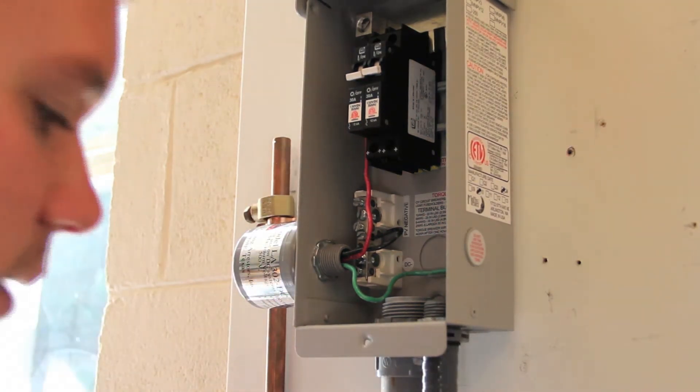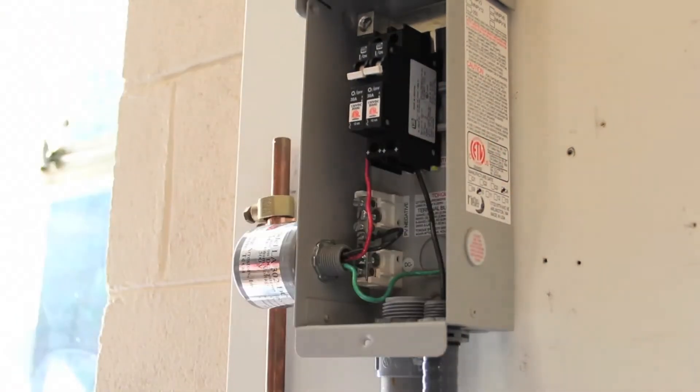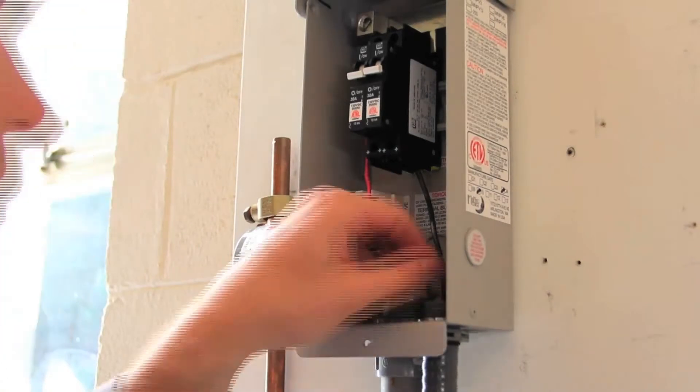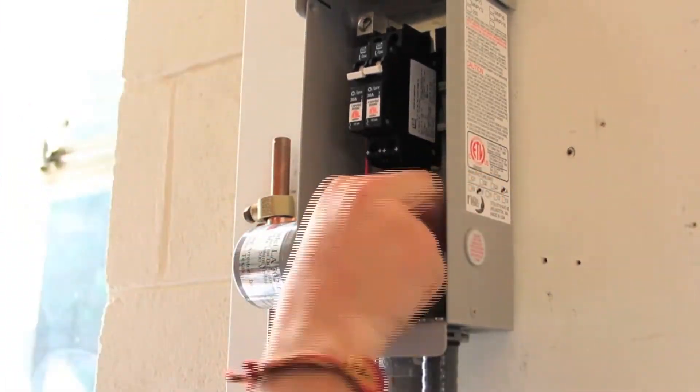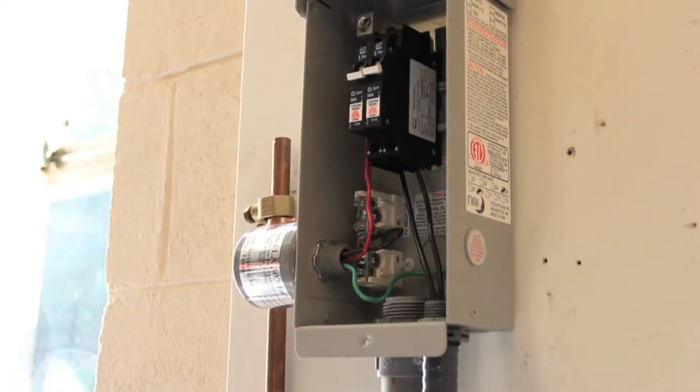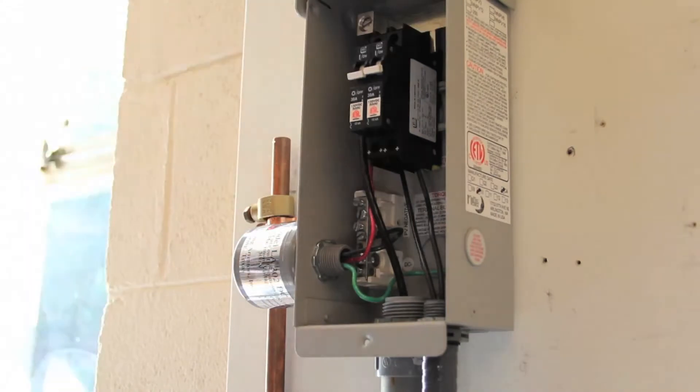And we'll begin by bringing our first array or module into the combiner box. This wire needs to be sized to carry the short circuit current of the module that you'll be installing in your array. And now the incoming PV current from these two strings will be paralleled on this paralleling bar.